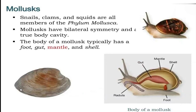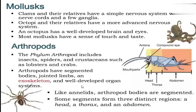Next is Mollusca. The body of the mollusk — mollusks have a mantle which is an enormous shell structure. The name of the mollusk relates to this soft body. Octopus have well-developed brains and eyes. Most mollusks have a sense of touch and taste.